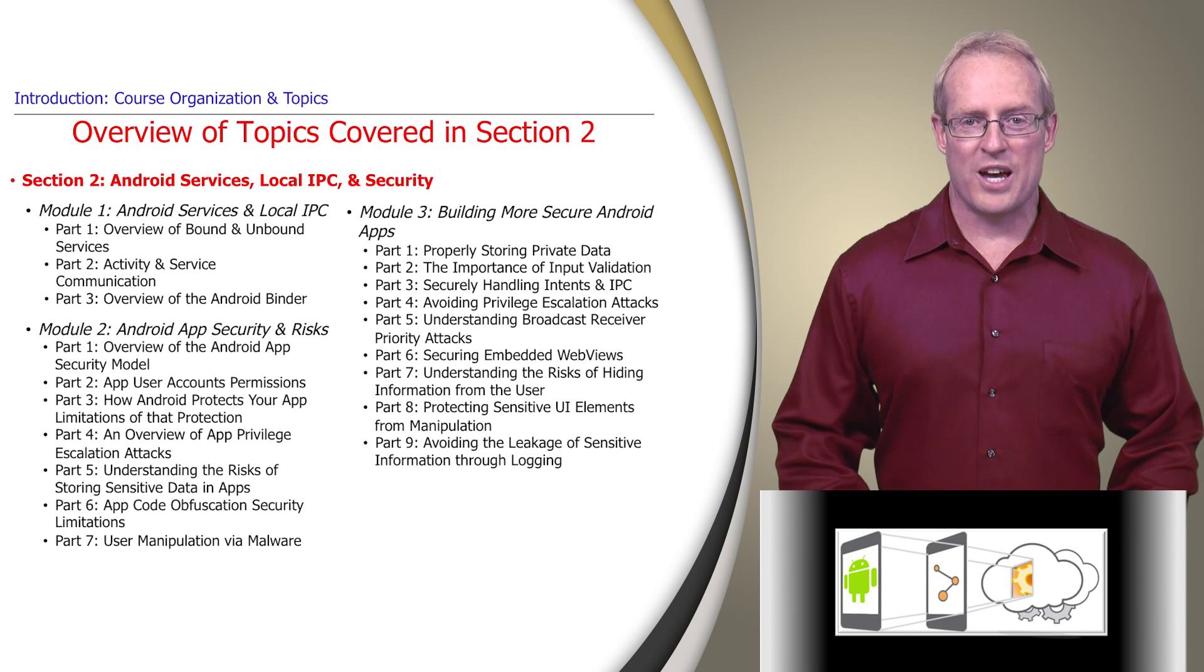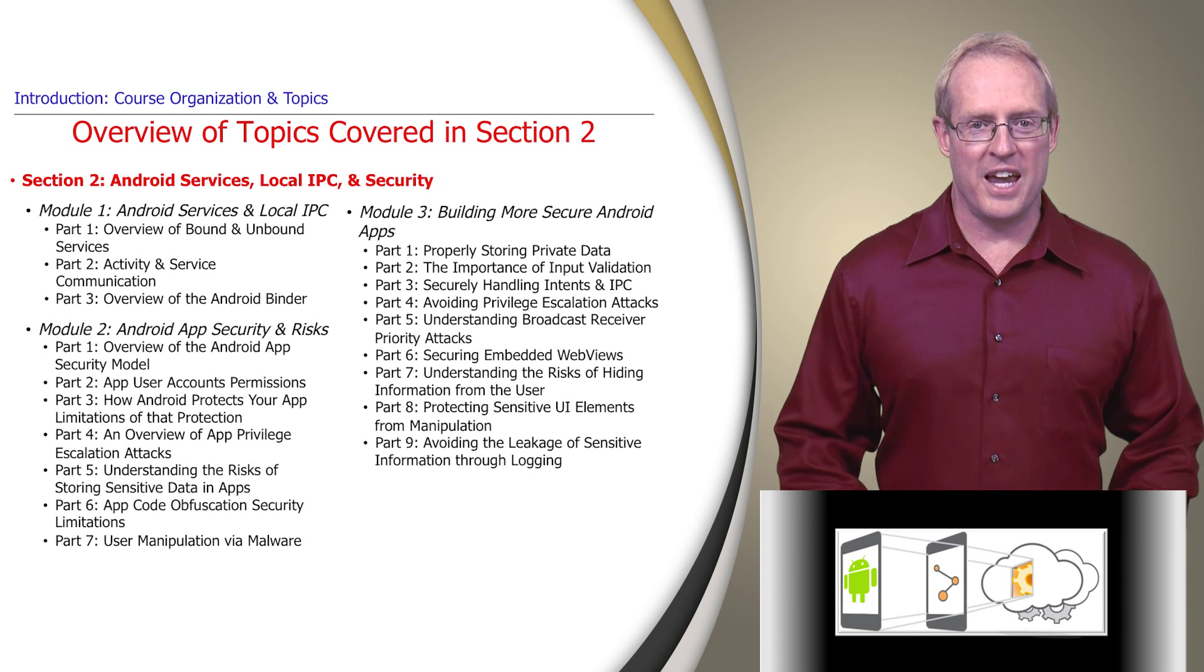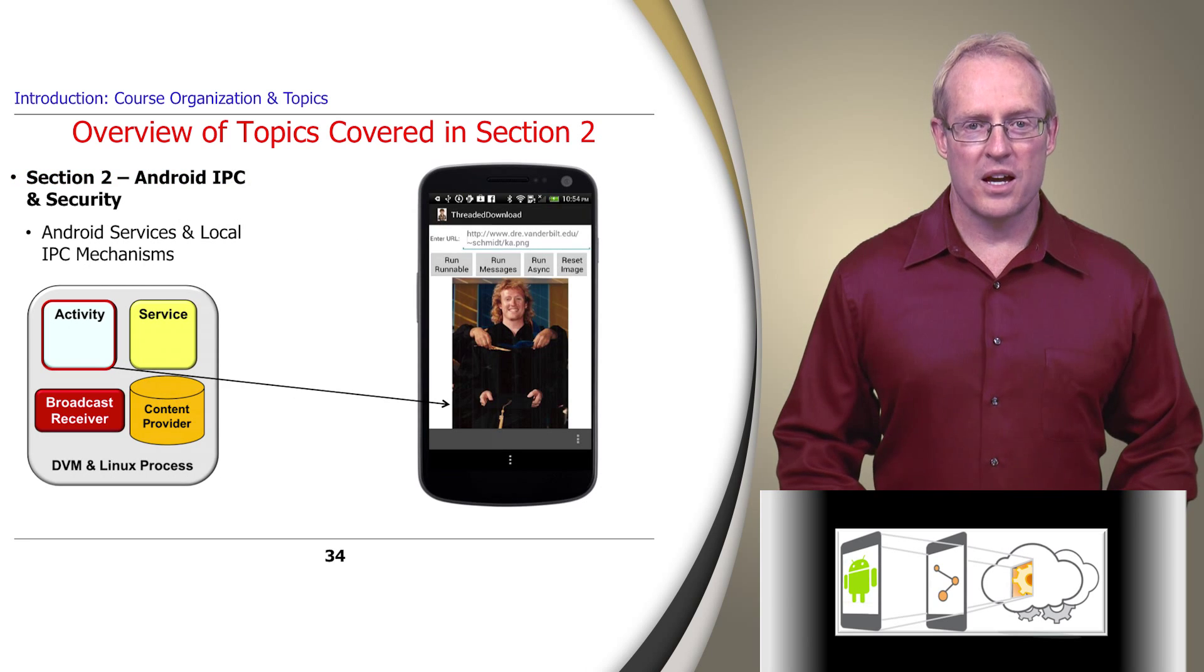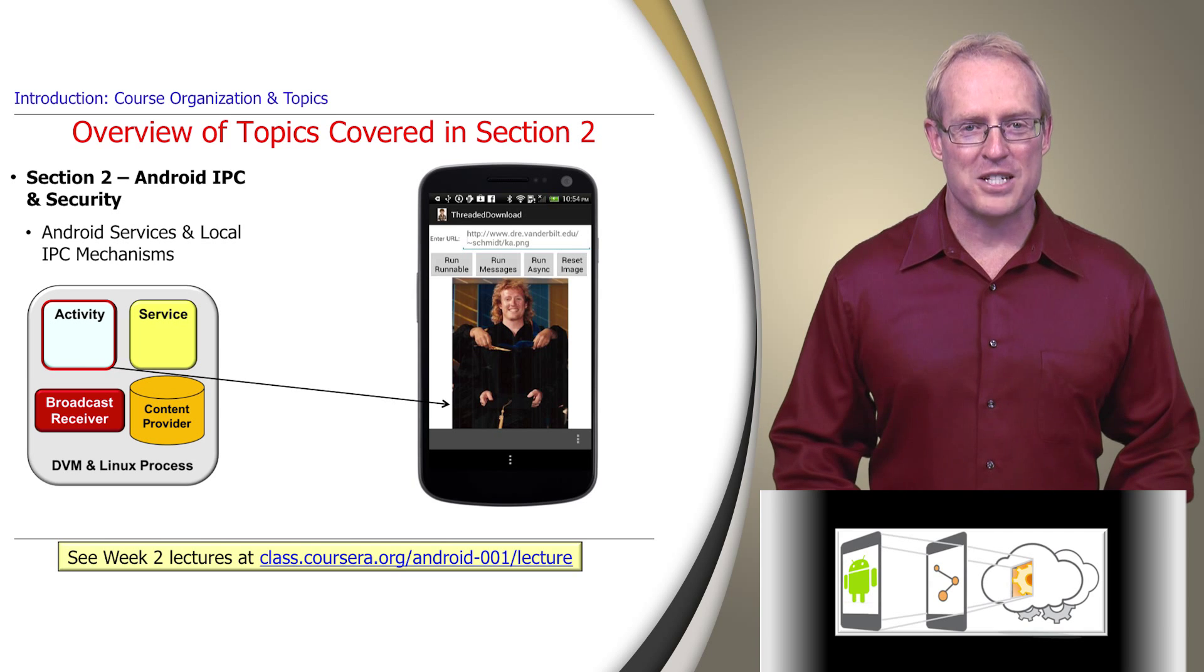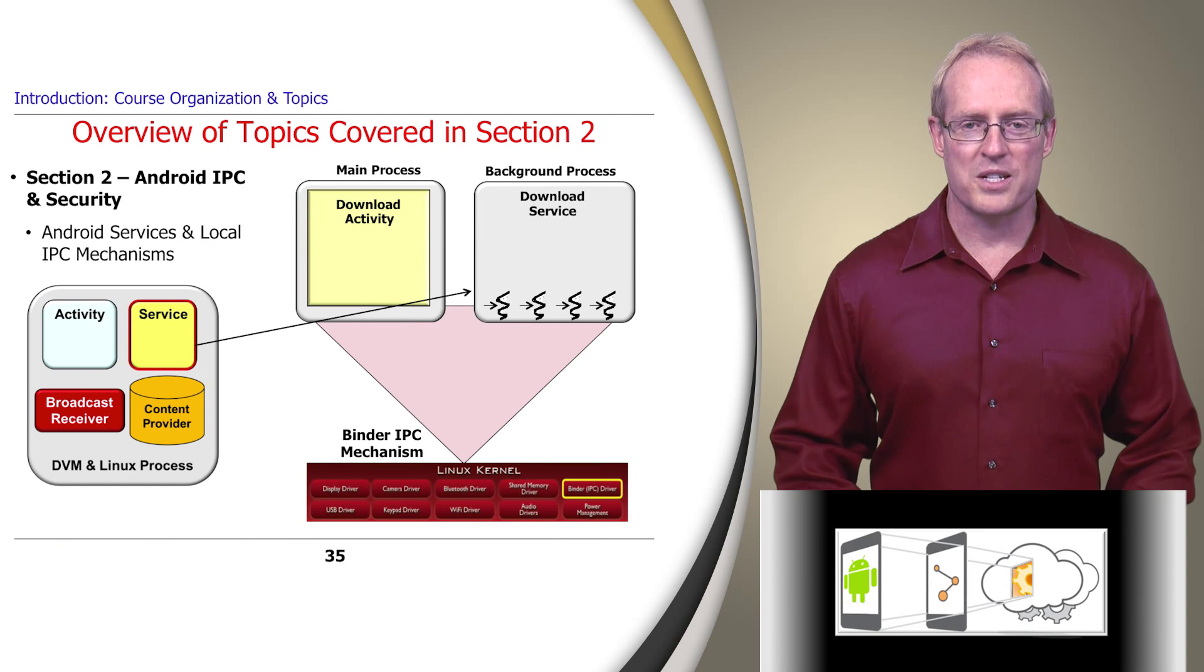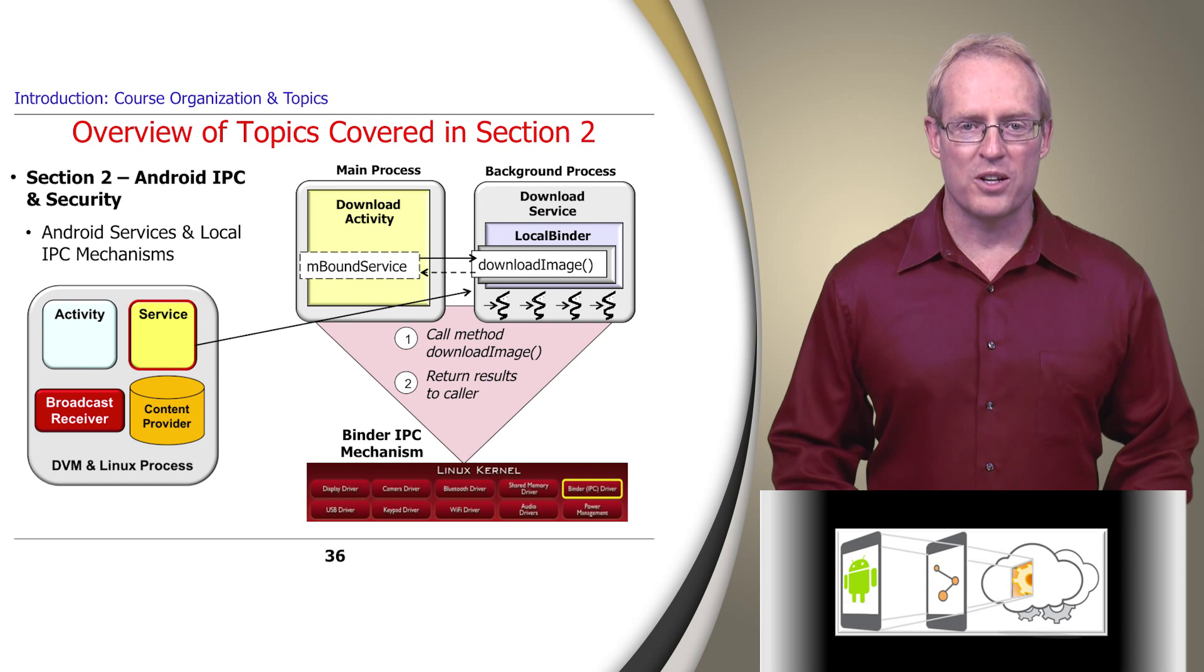Section 2 covers Android services, inter-process communication, and application security. Although the activity components, covered in week 2 of Professor Porter's MOOC, provide a flexible visual interface for interactions with the user, Android also defines service components, which run in a separate background thread or process. Services don't interact with the user directly. Instead, activities use services to perform long-duration operations, or access remote resources on behalf of users, such as downloading files from a server in the cloud.